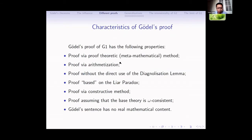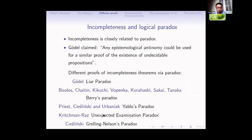Let's look at the characteristics of Gödel's proof. Gödel used a syntactic method and arithmetization. His proof does not directly use the diagonalization lemma. His proof is based on the Liar paradox. His proof is constructive, and he assumed that the base theory is omega-consistent, not just consistent. And the Gödel sentence has no real mathematical content — it is really a summary of the Liar paradox.